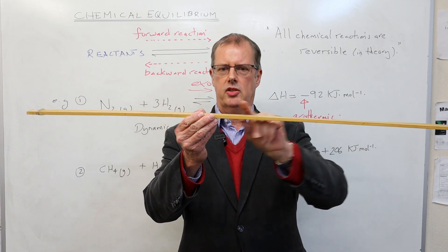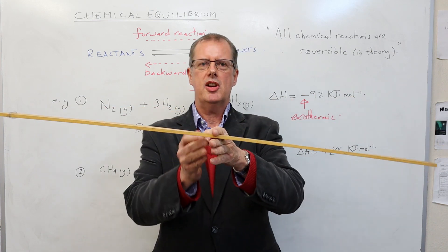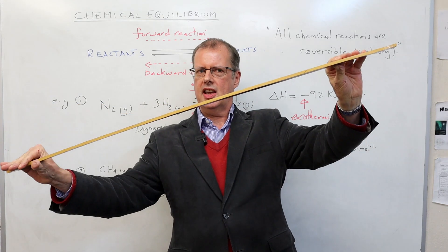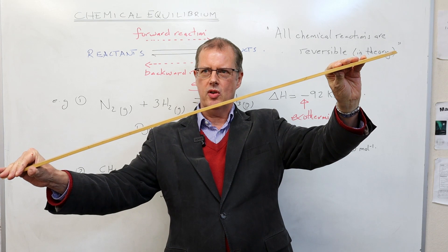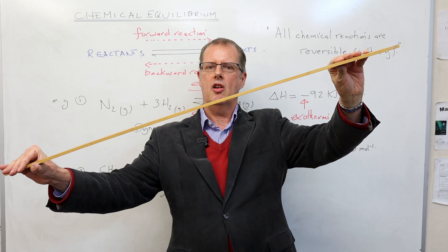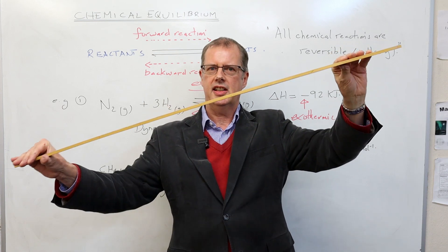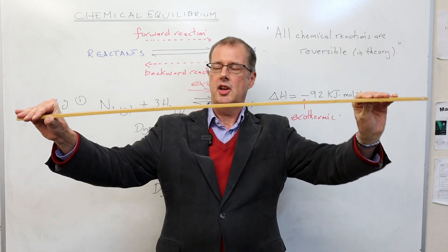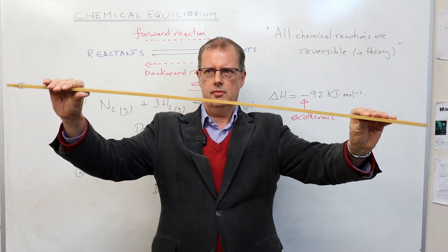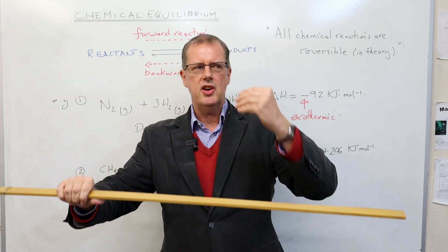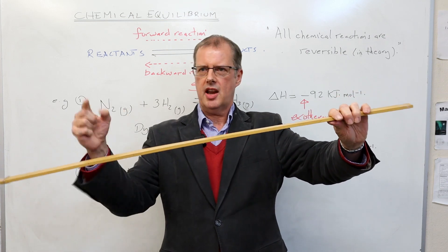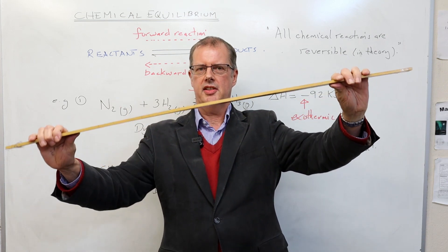Talking about static equilibrium — imagine people sitting on a seesaw. You could have a heavier person one end and a lighter person the other; it comes to a resting point. It's not dynamic because there are no processes happening underneath. It's completely stationary, and that position of equilibrium can be anywhere on that seesaw. Burning a piece of magnesium gives magnesium oxide — that is a static equilibrium; there's no backward reaction happening simultaneously.